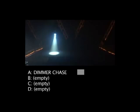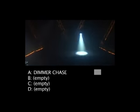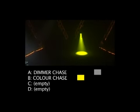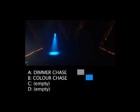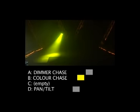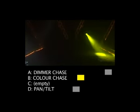Now you will see how to program a small queue consisting of 3 sequences. We are doing this example on 4 MX10s. In slot A of our queue we will put a 4-step dimmer chase. The moving square indicates the current step in the sequence. Then we will program a 3-step color chase in slot B, and finally a 2-step pan and tilt sequence in slot D.